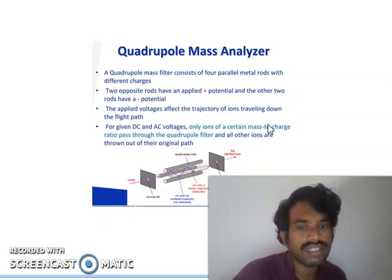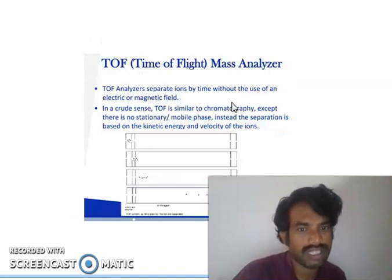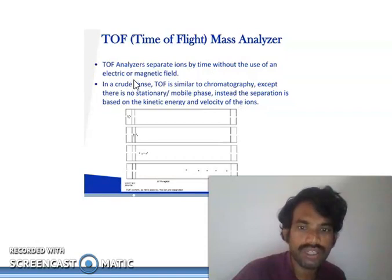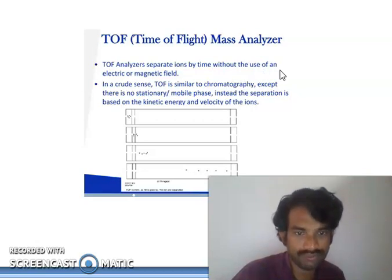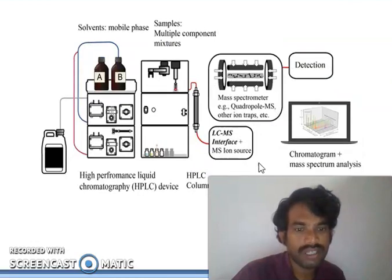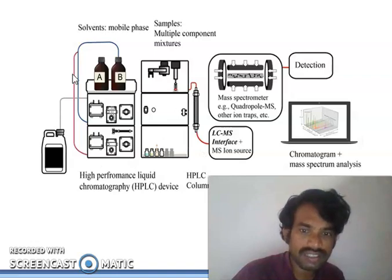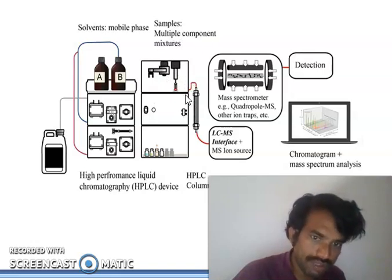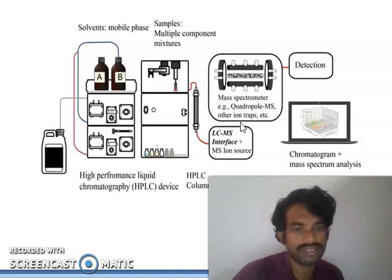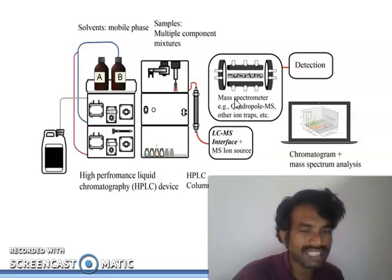The quadrupole mass analyzer and the time of flight (TOF) mass analyzer are important techniques. The TOF analyzer separates ions based on time without the use of an electric or magnetic field. Looking at the LC-MS image: solvent mobile phase goes through high performance liquid chromatography, then sample component mixtures are introduced, and the compound moves into the column, then to the MS ion source — this is the LC-MS interface. Then it moves to the quadrupole or other mass analyzers, then to detection.